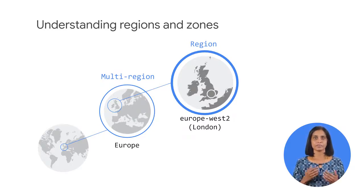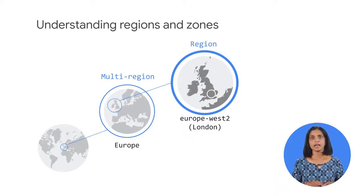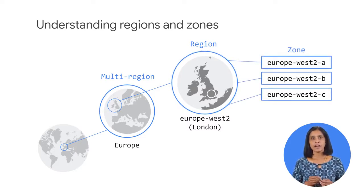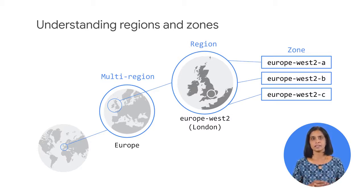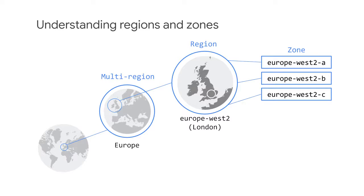Within a region, there's fast network connectivity — generally, round-trip network latencies of under one millisecond at the 95th percentile. As you can see, one of the regions in Europe is Europe West to London. Regions are divided into zones, which are deployment areas for GCP resources within a focused geographic area. You can think of a zone as a data center within a region, although strictly speaking, a zone isn't necessarily a single data center. Compute Engine virtual machine instances reside within a specific zone. If that zone became unavailable, so would your virtual machine and the workload running on it. Deploying applications across multiple zones enables fault tolerance and high availability.